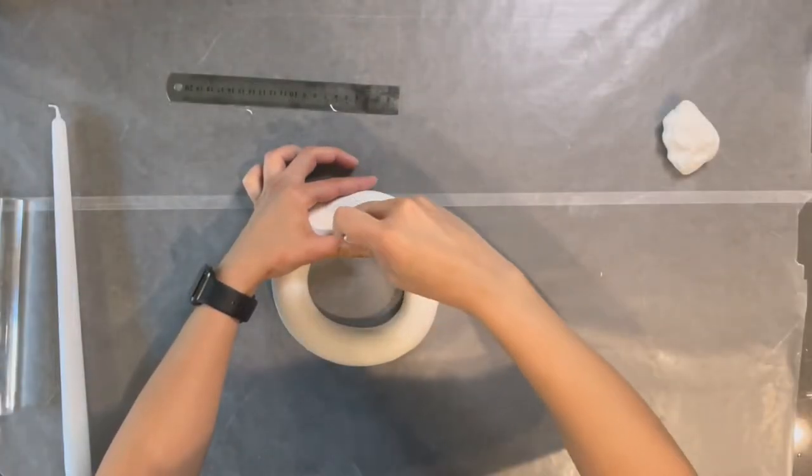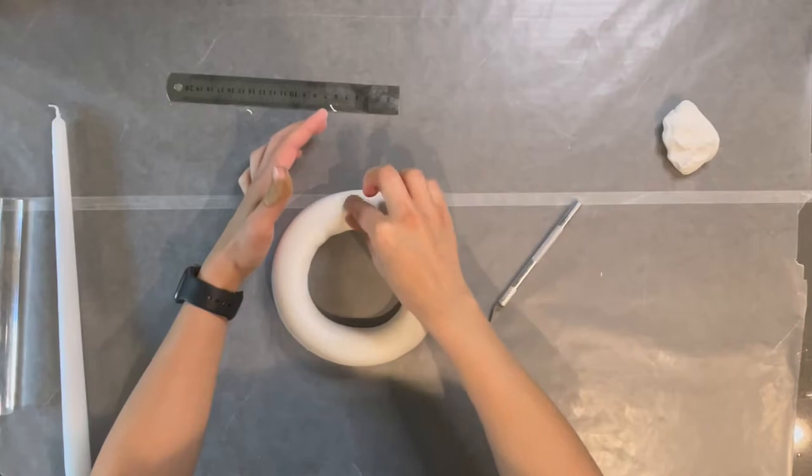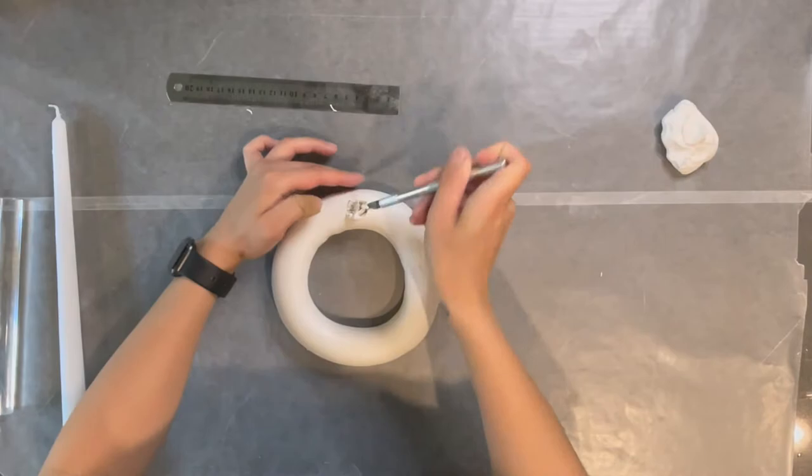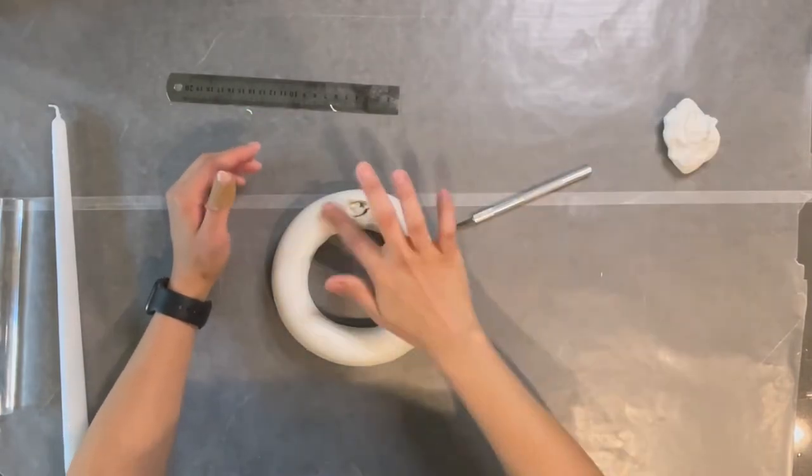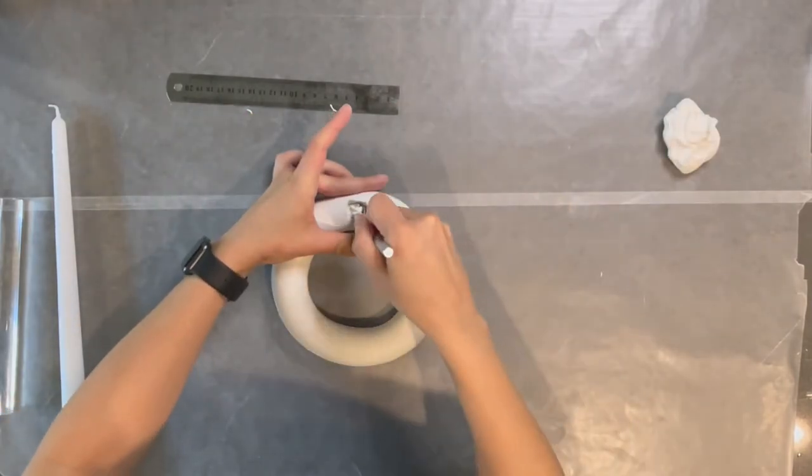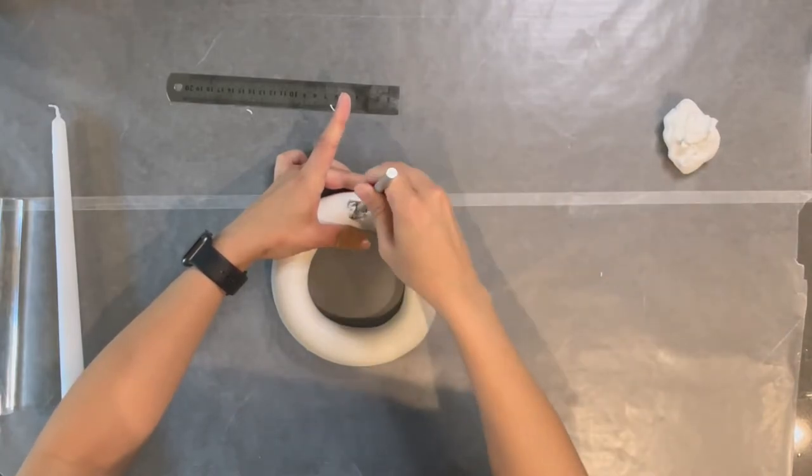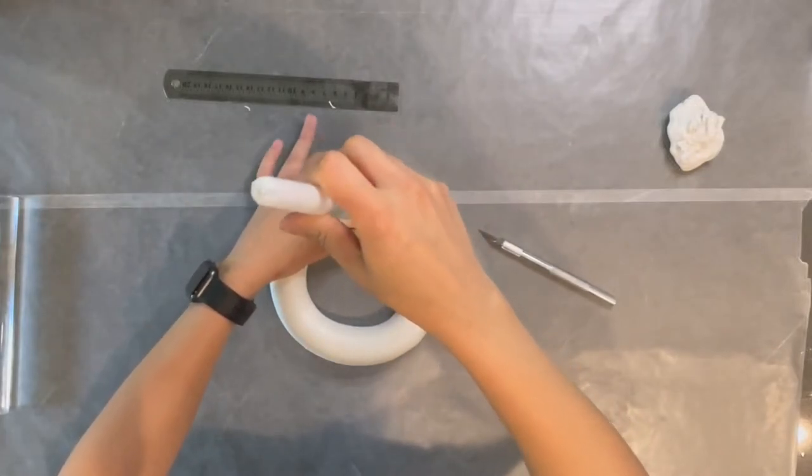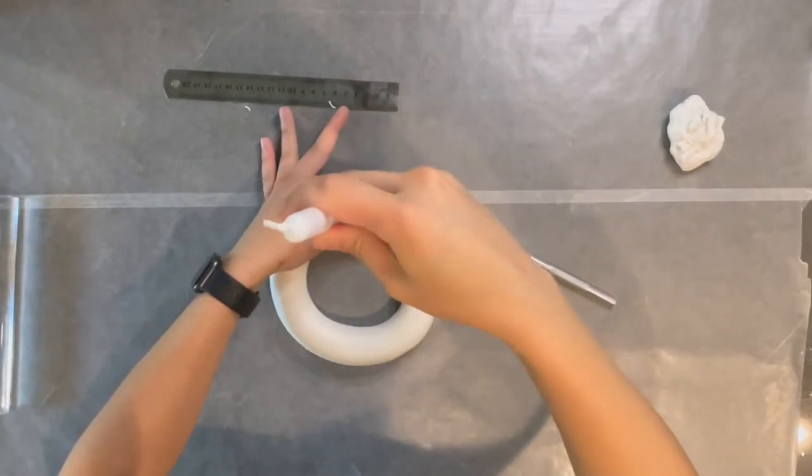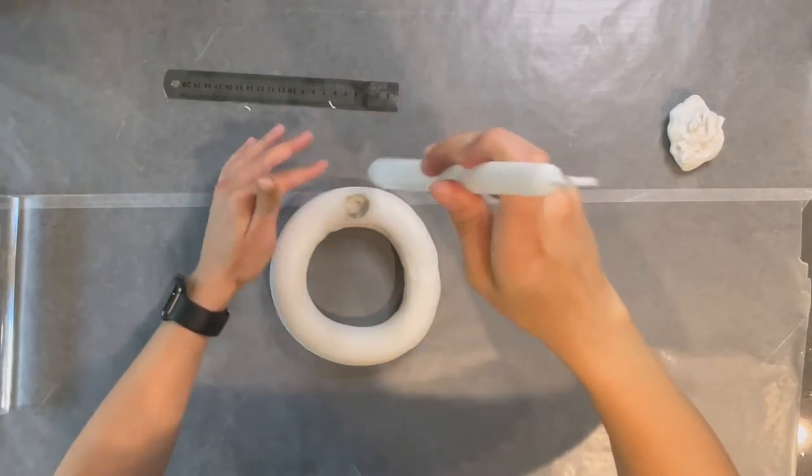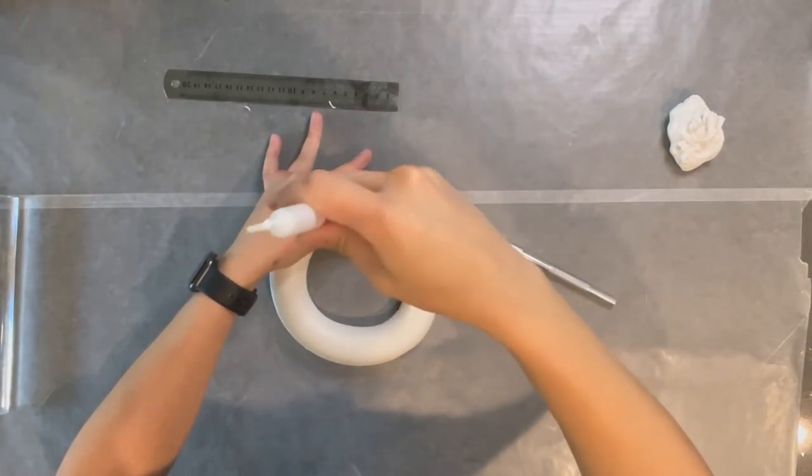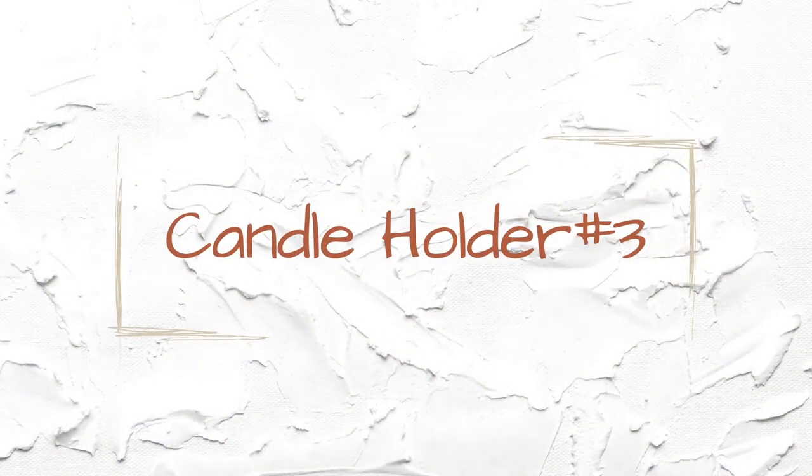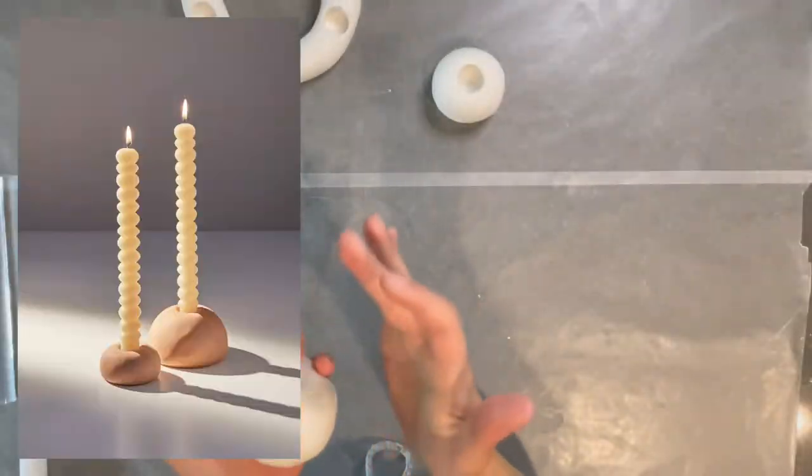This next step is basically the same as the first candle holder. I again used my exacto knife to cut and carve out excess clay where the holes for the candles are going to be, and then pushed the actual candle in to ensure it fits, that it's not too snug or too loose. You want to make sure the hole is not too big either, because then your taper candles will not stand straight. I repeated this process three times. If you imagine a triangle within the circle, that's where the holes for this candle holder should be.